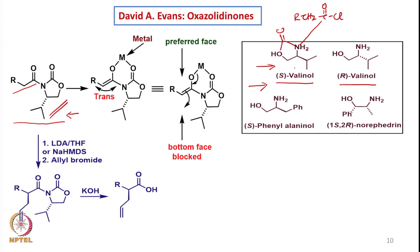If we convert the oxygen and nitrogen and make it a carbonyl group, we get an auxiliary like this. From the nitrogen, if we have R-CH₂-CO-Cl and NH, we deprotonate and make a bond between the two. This gives the product formed from S-valinol. Likewise, if we take R-valinol, the substituent will be beta-oriented. Right now it is alpha-oriented; it can be beta-oriented from R-valinol. We can use many kinds of chiral auxiliaries from different amino acids to make different types of oxazolidinones, including one from norephedrine.